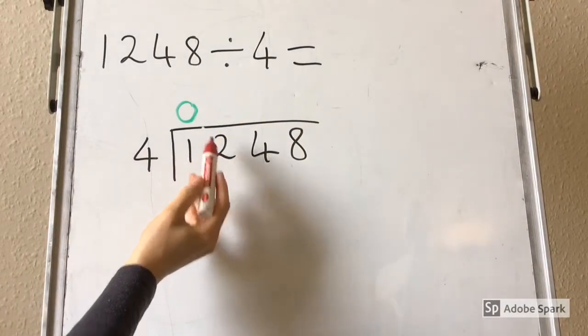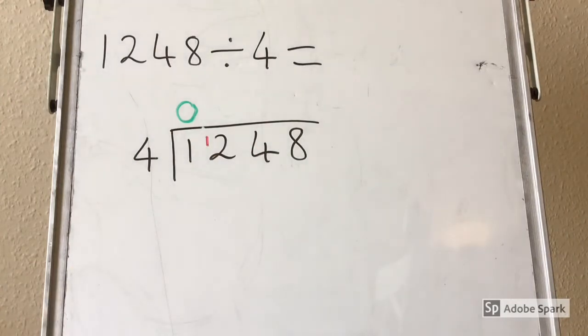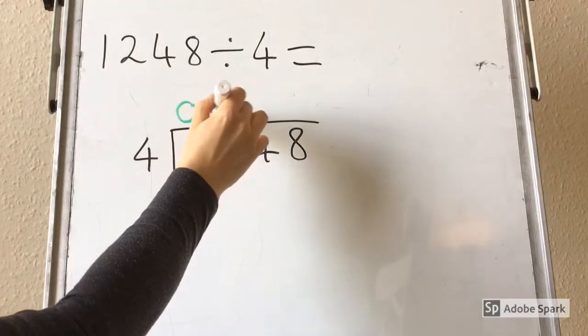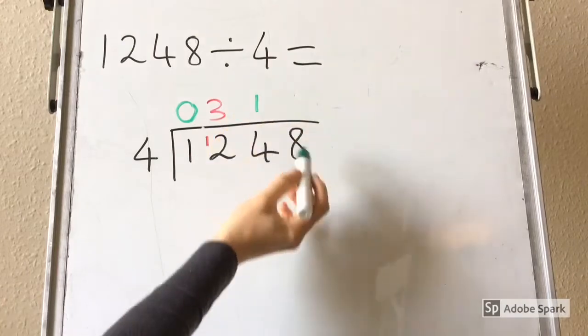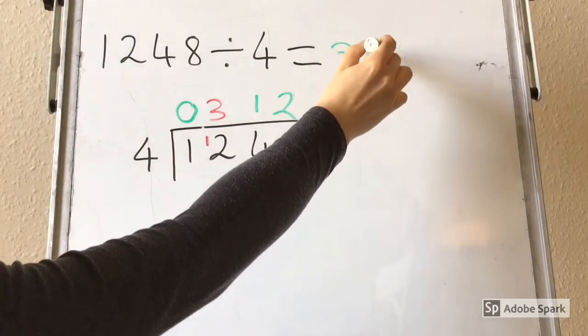Well done if you spotted my mistake. I should have carried the 1 and not the 4. This is one of the most common mistakes in short division. So now I need to ask myself how many times 4 goes into 12, which is 3. How many times 4 goes into 4? 1. And how many times 4 goes into 8? 2. So you should have got 312.